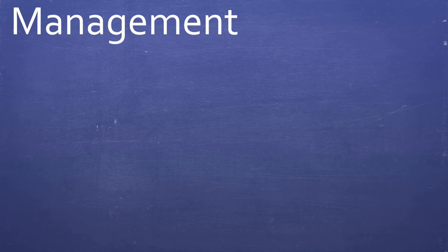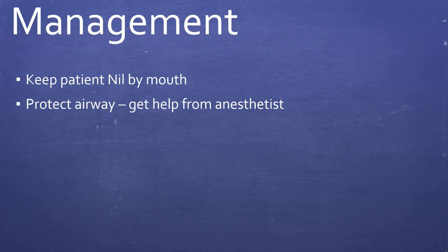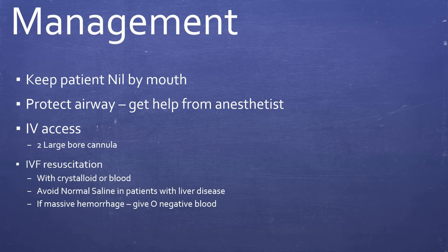So to begin with, keep the patient nil by mouth and protect airway. Get help from ICU if needed. IV access with two large bore cannulae and IV resuscitation with crystalloid or blood. Avoid normal saline in patients with liver disease. If there is massive hemorrhage, give O negative blood.